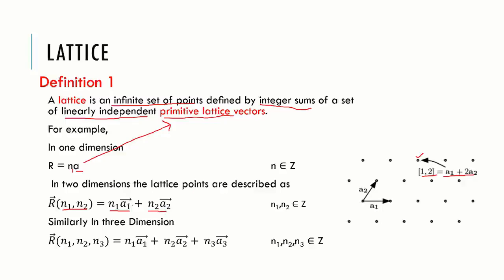It is important to point out here that in two or three dimensions, the choice of primitive lattice vector is not unique. In similar fashion, in three dimensions, point (n1, n2, n3) can be written as n1 times a1 plus n2 times a2 plus n3 times a3.